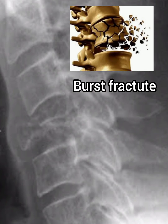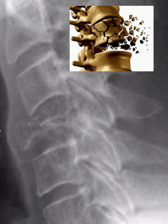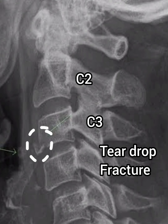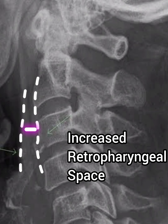The completely crushed body of C4 and its fragments are dispersed in all directions, also disturbing the vertebral canal. This is a burst fracture of the vertebral body.